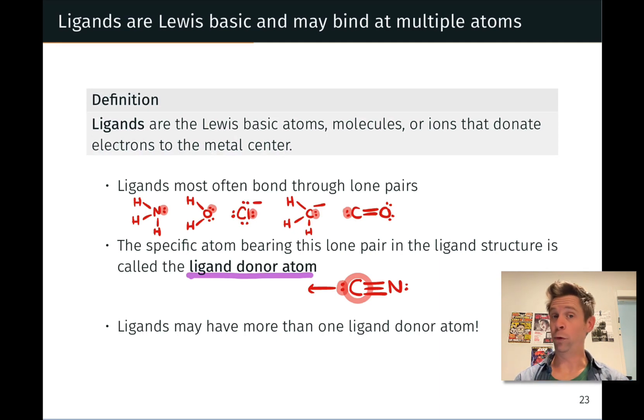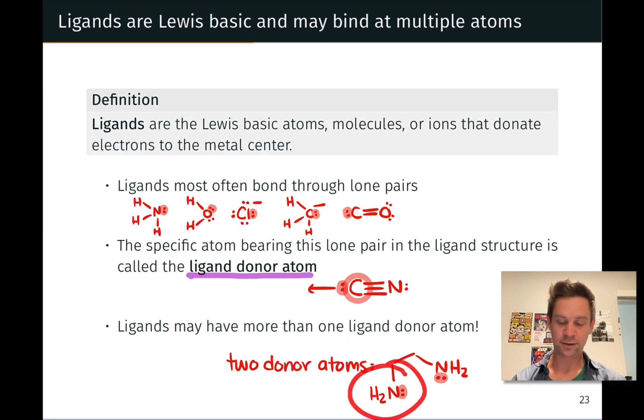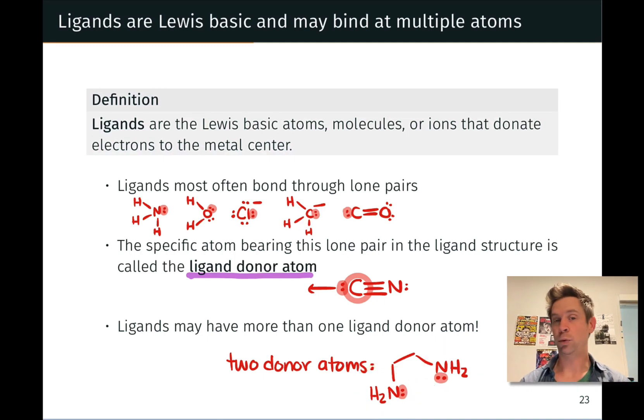Ligands may have more than one donor atom, and we'll develop some terminology around that here shortly, but just to show one example, a molecule that contains two ammonia-looking nitrogen atoms, two amino nitrogens, can bind in two places, can form two dative bonds to a single metal center. This is ethylenediamine, and it is what we'll call a bidentate ligand with two binding points on it.